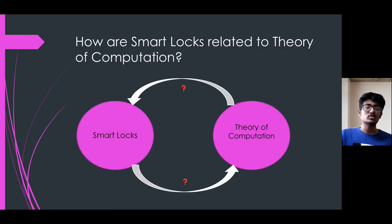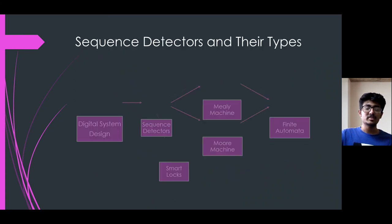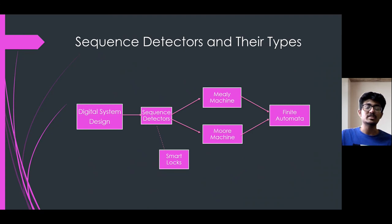How are Smart Locks related to theory of computation? We have a topic in our electronics course named sequence detectors. Sequence detectors are essentially machines which take a certain input and if the input matches the code which was given to them then they will give an output. If the code doesn't match then they will reset. So these machines are of two types: Mealy machine and Moore machine. These are essentially finite state machines which will take the input and if the input is matching, then they will proceed to the final state. An application of sequence detectors is a smart lock.